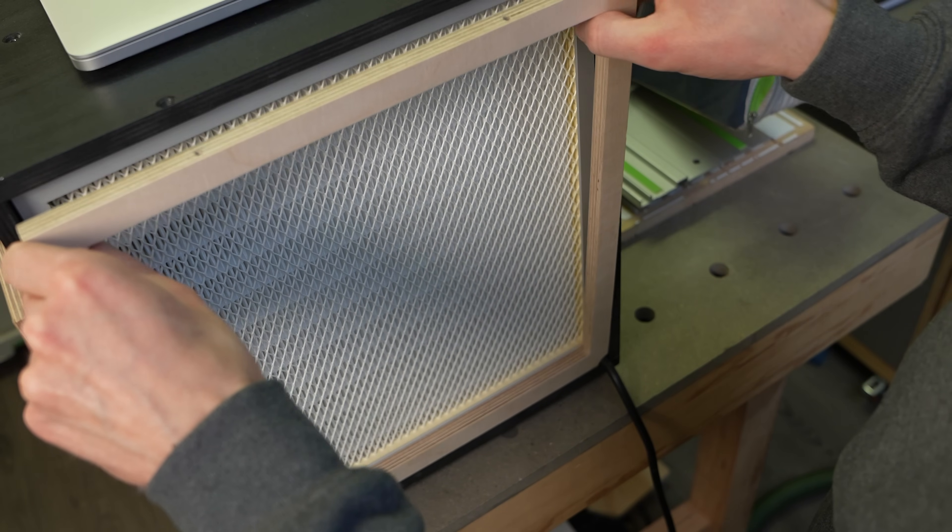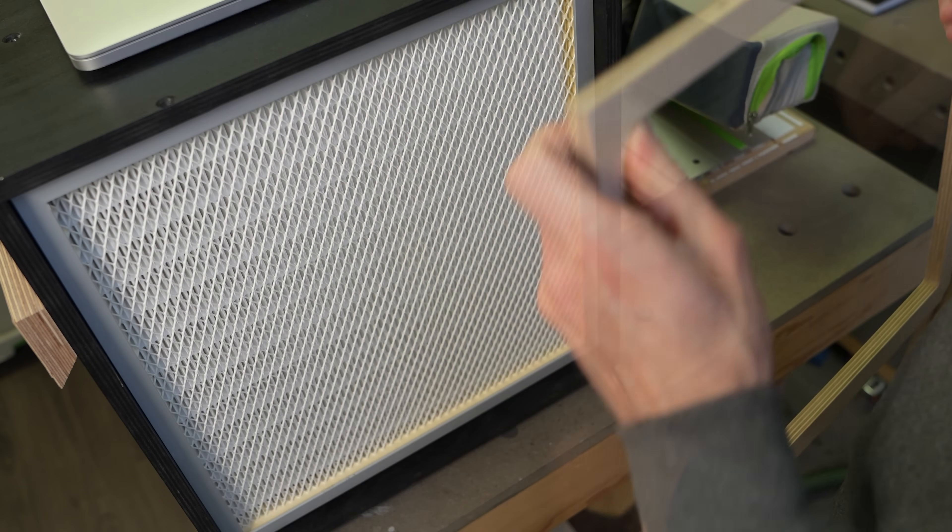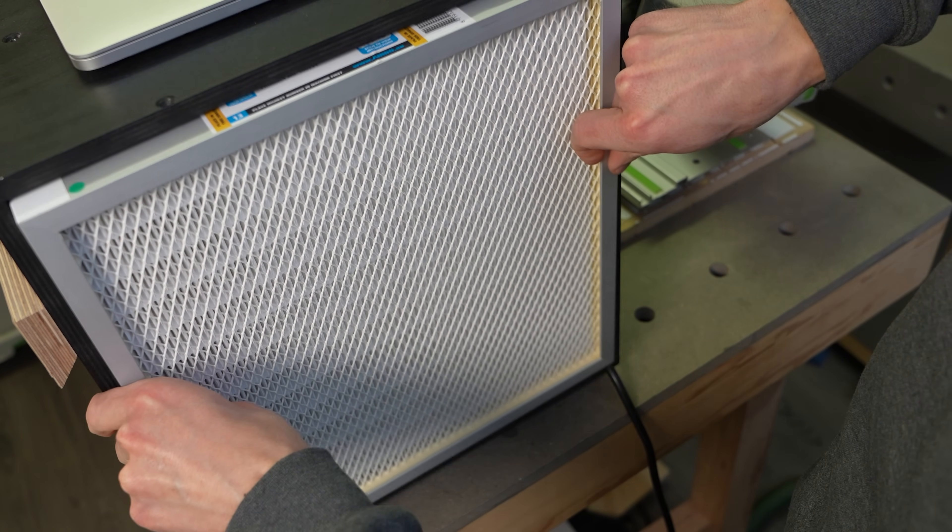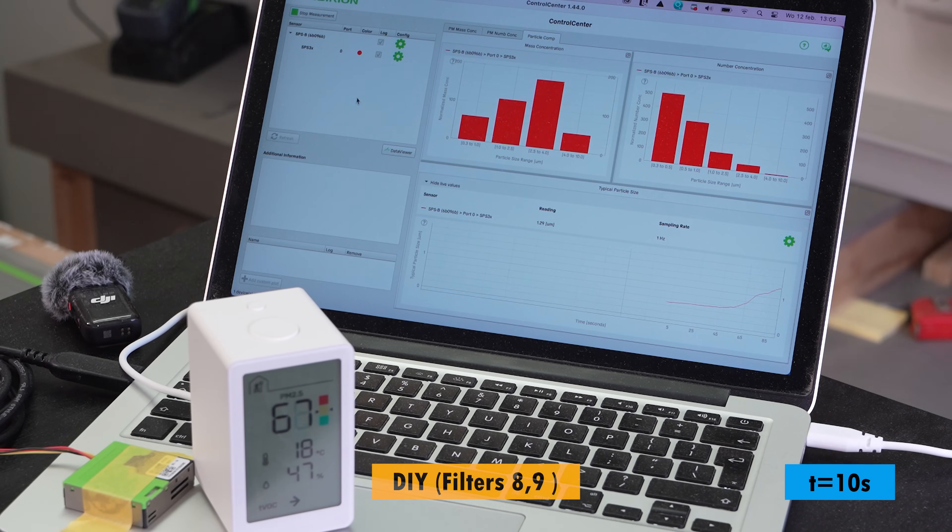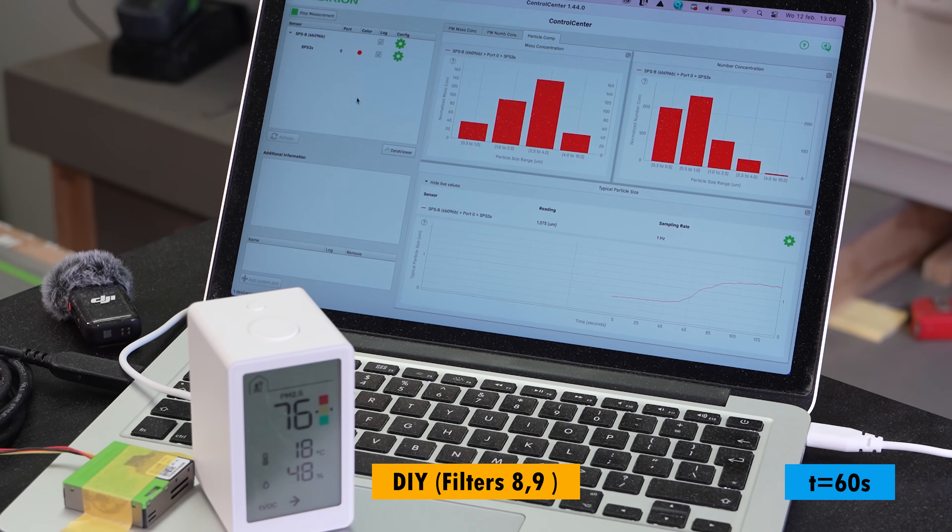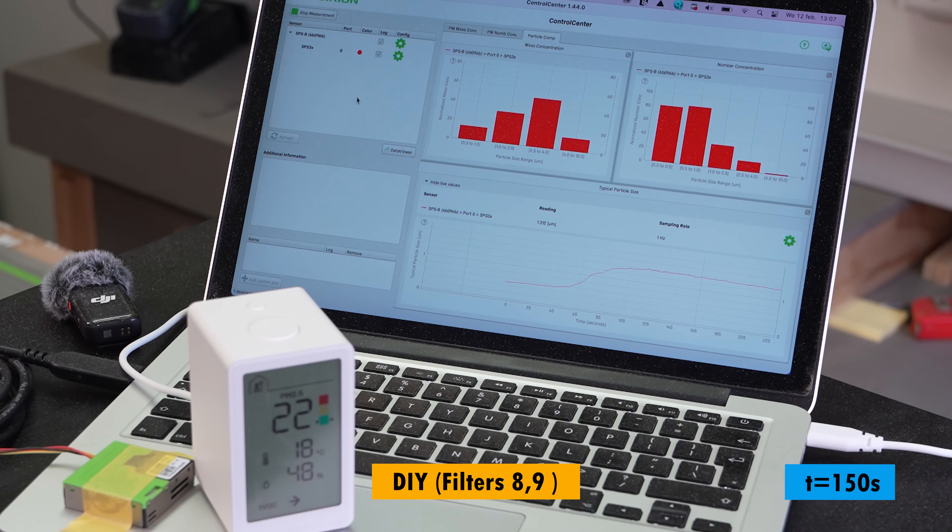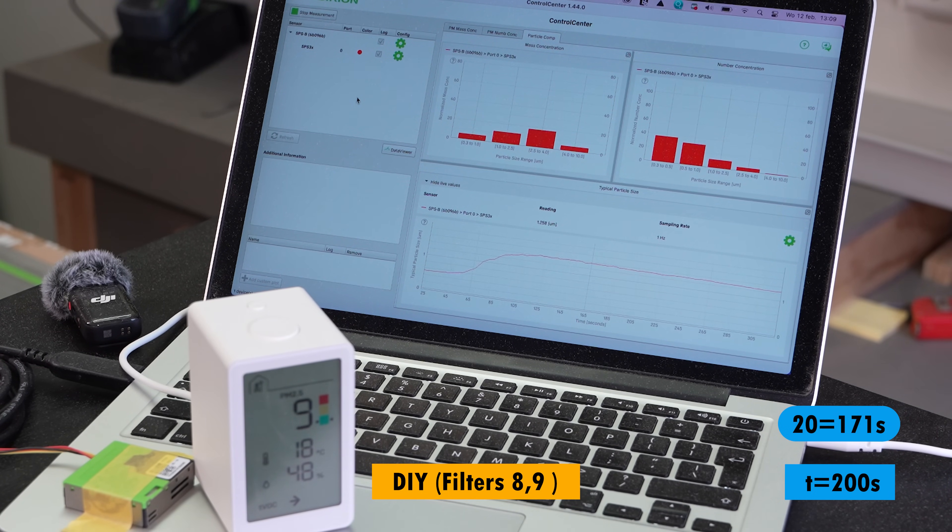I removed the HEPA filter to find out if the setup with only the type 8 and 9 filters are capable of extracting the fine dust particles out of the air. I had my doubts about that but was surprised in the speed that the rating went down to 20. It took less than 3 minutes and just shy of 4.5 minutes to reach the goal of 7.